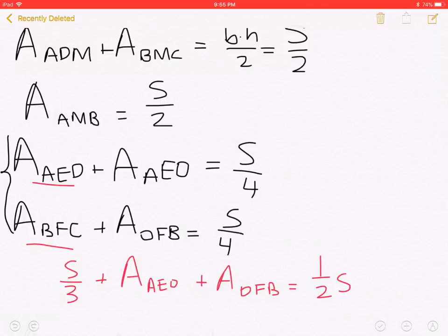Adding these two equations, we will have S over 3 plus area of AEO plus the area of OFB is S over 2.